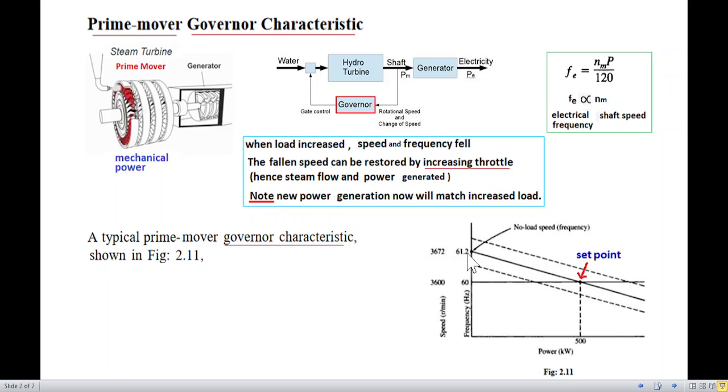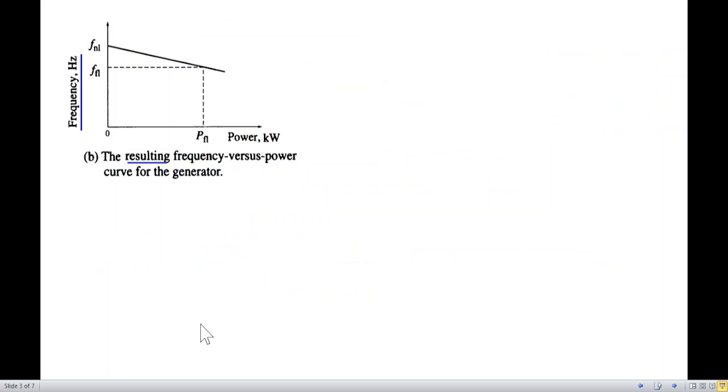We use this type of graph, which is known as the prime mover governor characteristics. This is also called slope. On one side is the power, and the other side is frequency, and also the speed. It is also called droop characteristics, and droop means inclined downwards.